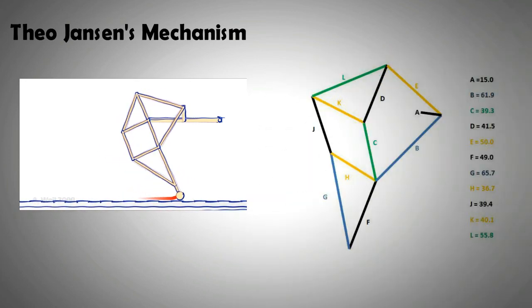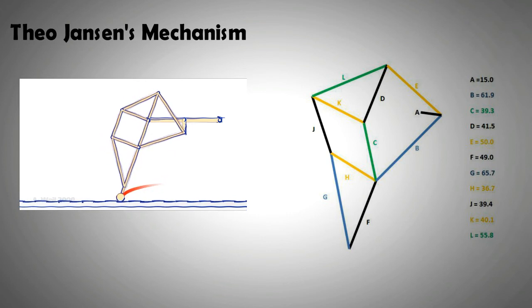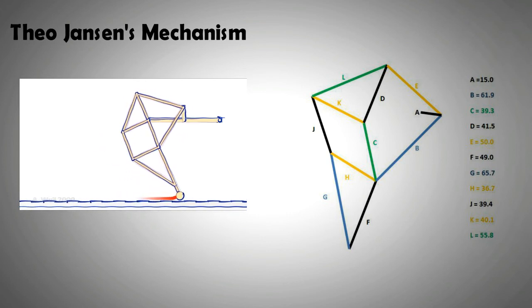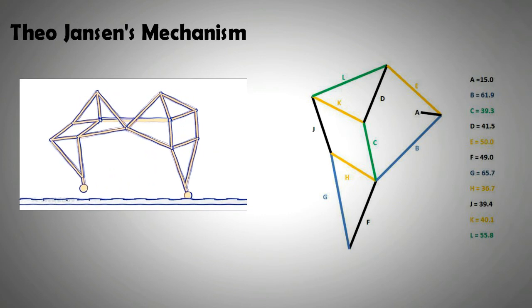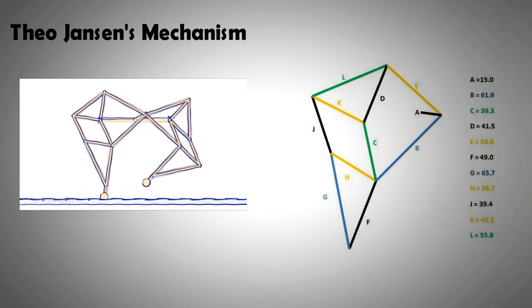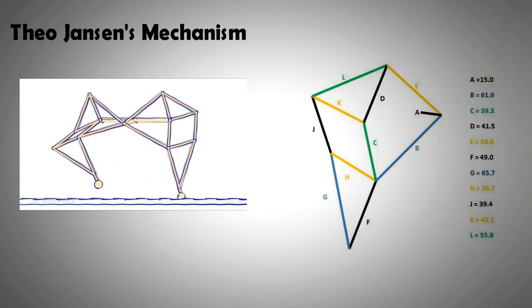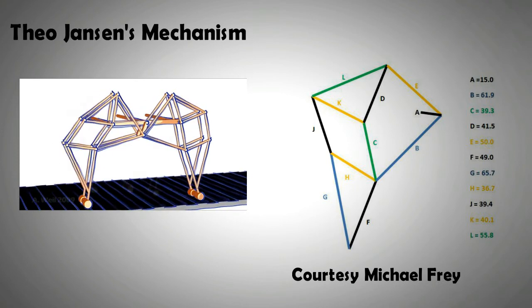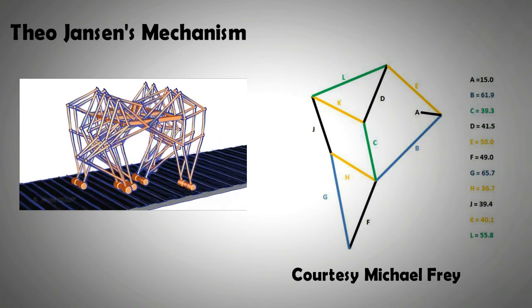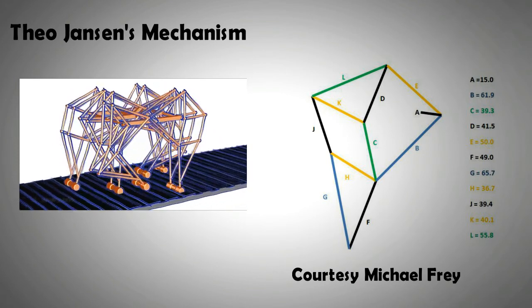If anyone wants to create Theo Jansen's mechanism at home, then for convenience the picture on the screen shows the links that form one of the many legs that the mechanism can have. On the right-hand side, the numbers indicate the length of the bars. The free end of the A bar could be connected to a motor or could be placed at the center of a flywheel.